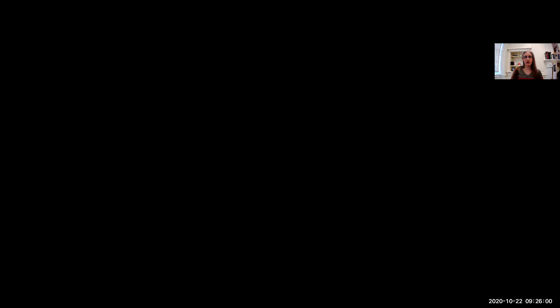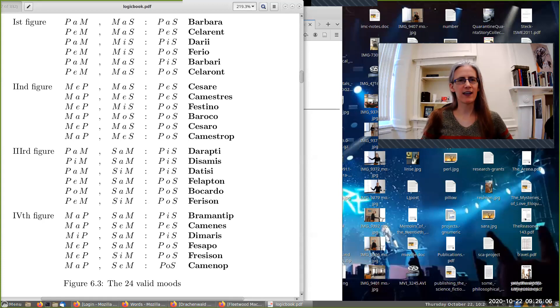Now you might remember back when I was introducing the 24 syllogistic moods that are standardly taken to be valid, and I gave you a list that was ordered by figure and it had names for every single one of them. If you don't remember, I'm going to try to share my screen so hopefully you can now see it up on the left hand side of the screen. So at the top we have our four axioms, which we've been doing quite a bit with in our proof theory.